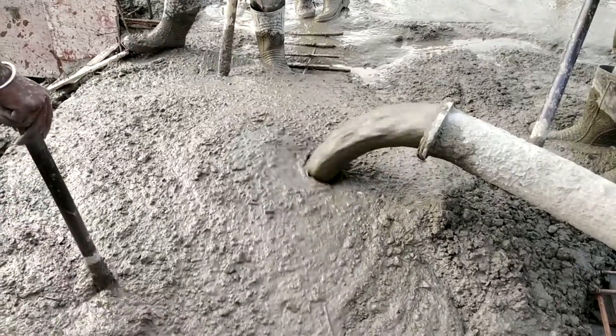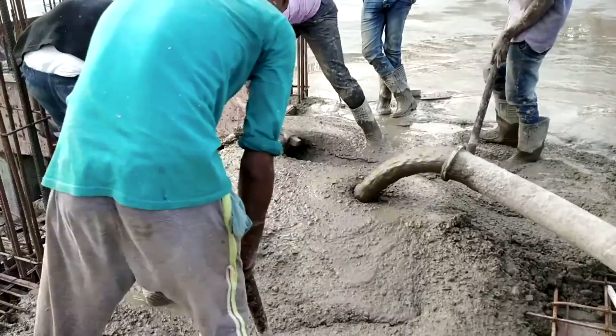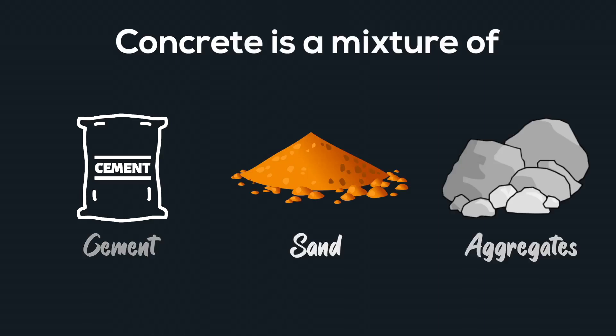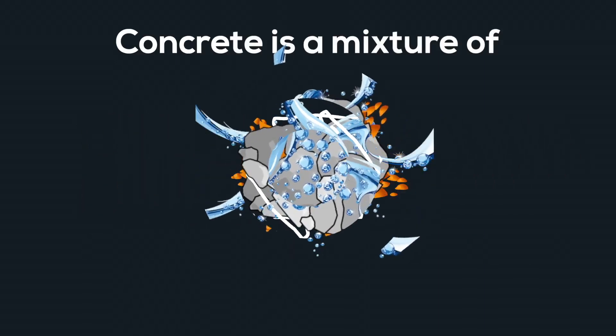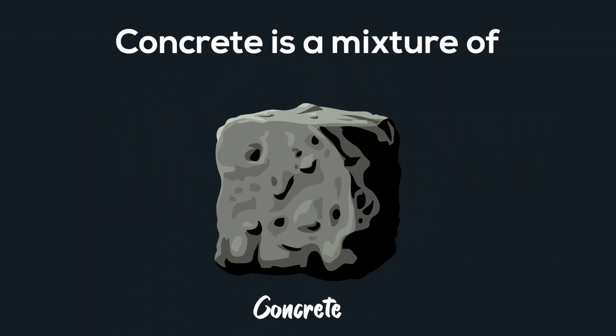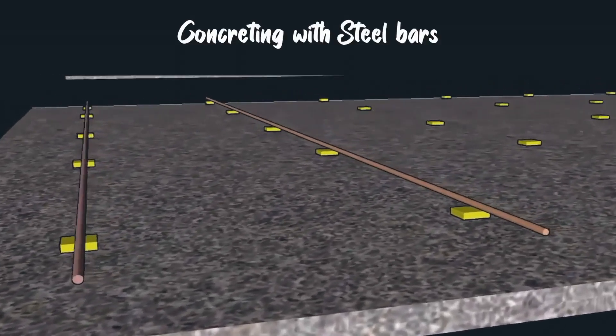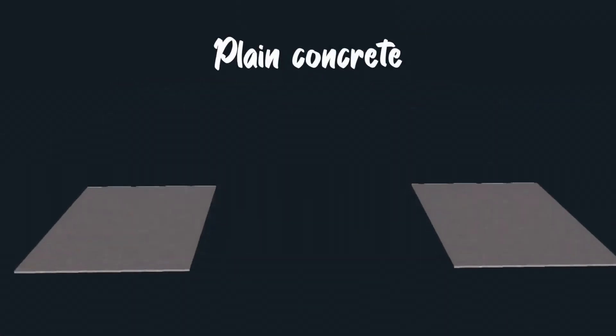Before knowing all about waterproofing, let's know something about concreting, because that will be the surface that we will be waterproofing on, and that is the surface with which most of the structure is made. Concrete is a mixture of cement, sand, and aggregates, which is mixed with water and placed onto surfaces to make a rigid surface.